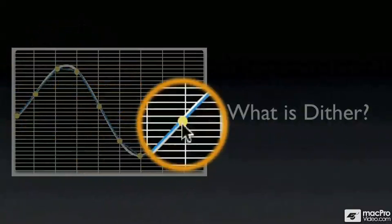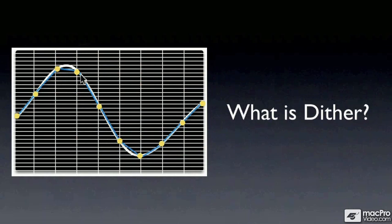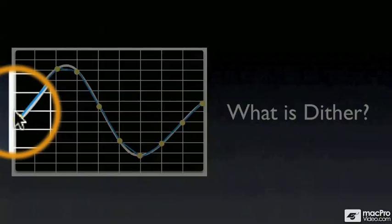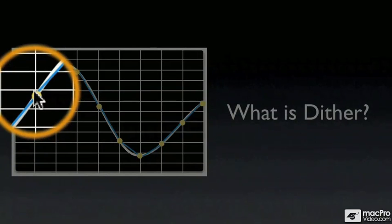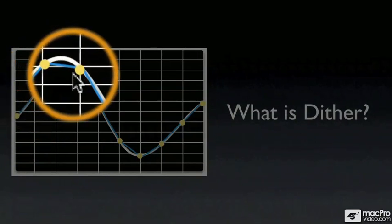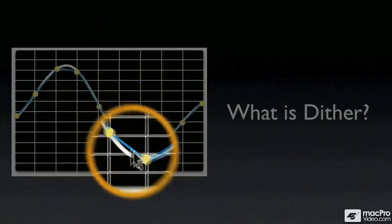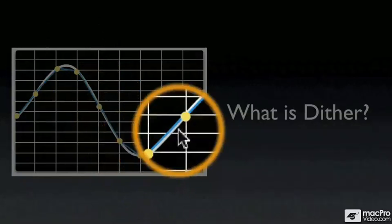But what happens when we resolve it to 16-bit? Well, some of those samples have to be quantized to a different level, and that quantization creates distortion. Every time a sample has to be rounded to a different level, well, you're creating distortion. There's no way around it.